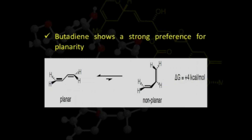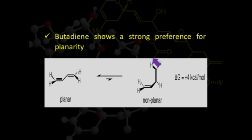In the case of butadiene, two geometrical isomers are possible. One has a planar conformation and the other has a non-planar conformation. The planar conformation geometrical isomer is much more stable than the non-planar one.